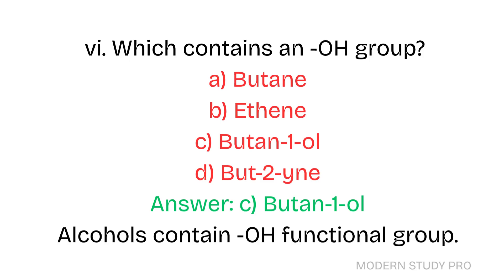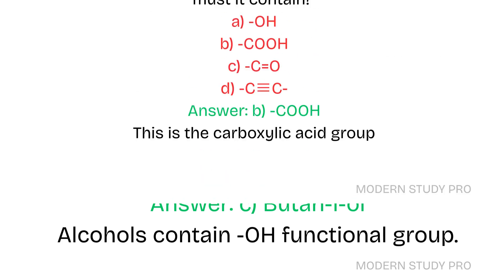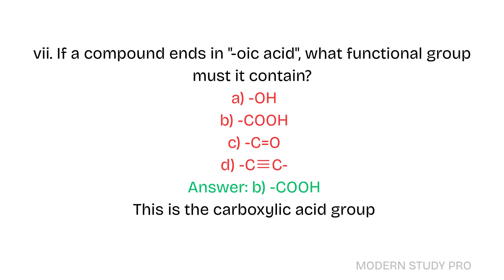Question 6: Which compound contains an OH group? A. Butane. B. Ethene. C. Butan-1-ol. D. Butyne. Answer: C. Butan-1-ol. Alcohols contain the OH functional group. Question 7: If a compound ends in -oic acid, what functional group must it contain? Answer: B. COOH — this is the carboxylic acid group.